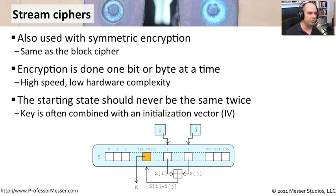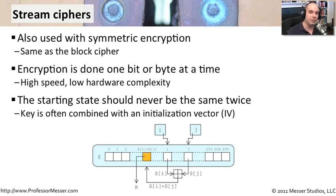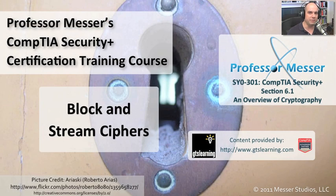One important aspect of stream ciphers is the initialization vector, or IV. The IV should never be the same when starting a new stream. Otherwise, somebody may be able to figure out the initialization vector, the cipher, and the key being used, and apply it every time you send data across the network. So one very important part of cryptography is to make sure your IV is always changing whenever you use it to encrypt information.